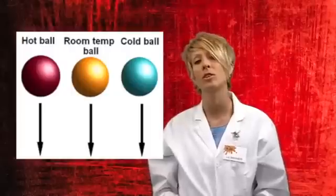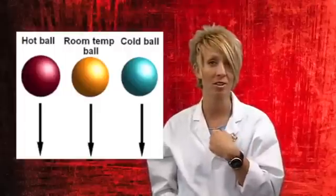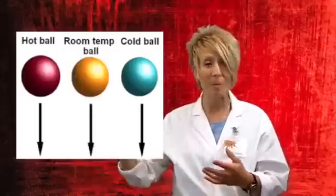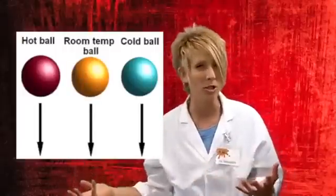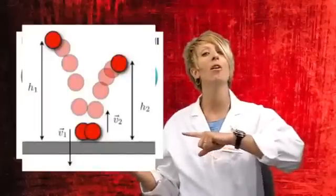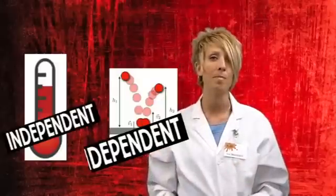Let's look at an example. My scientific question is: does changing the temperature of a ball affect the height that the ball will bounce? What is the independent variable — the thing that I change? That would be the temperature of the ball. What depends on the temperature, what am I measuring? That would be the height of the ball. So temperature is my independent variable; height is the dependent variable.